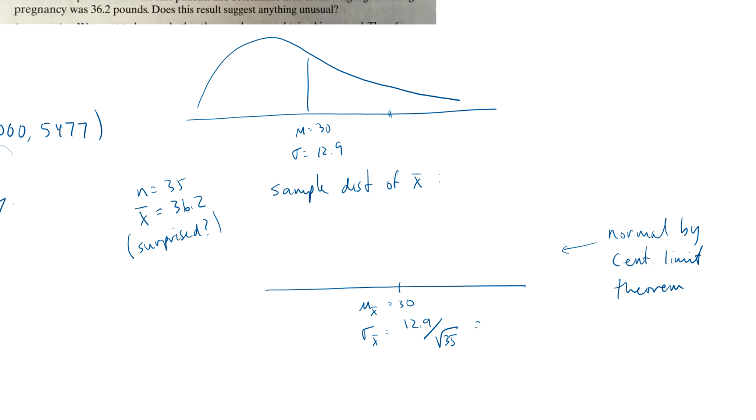So let's see, what is that 12.9 divided by the square root of 35. We get 2.18. So I'll draw the normal curve. It's usually easier to draw the curve first and then put the average in the middle. So we've got 36.2. And you can already tell that that's not likely to happen, right? Because 30 to 36 is 6 units, roughly. And the standard deviation is 2. So 2, 4, 6. It's like 3 standard deviations away.